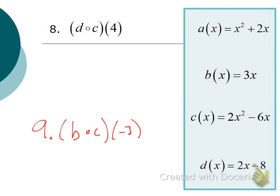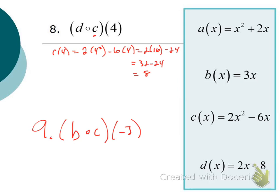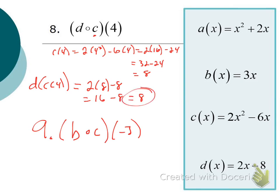For D composed of C of 4, we evaluate the second function first: C of 4 means plugging 4 in for X in the C function. 4 squared is 16, and 6 times 4 is 24, giving 32 minus 24 equals 8. So C of 4 equals 8. Now we take 8 as the input for the D function, which is 2X minus 8: 2 times 8 minus 8 equals 16 minus 8 equals 8. So D of C of 4 equals 8.